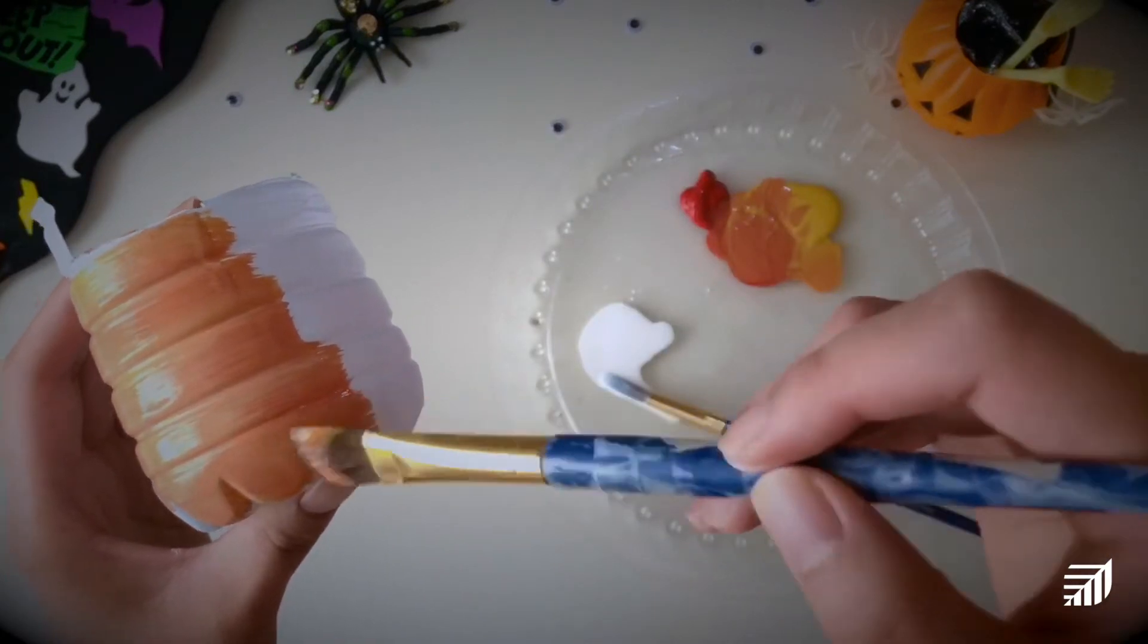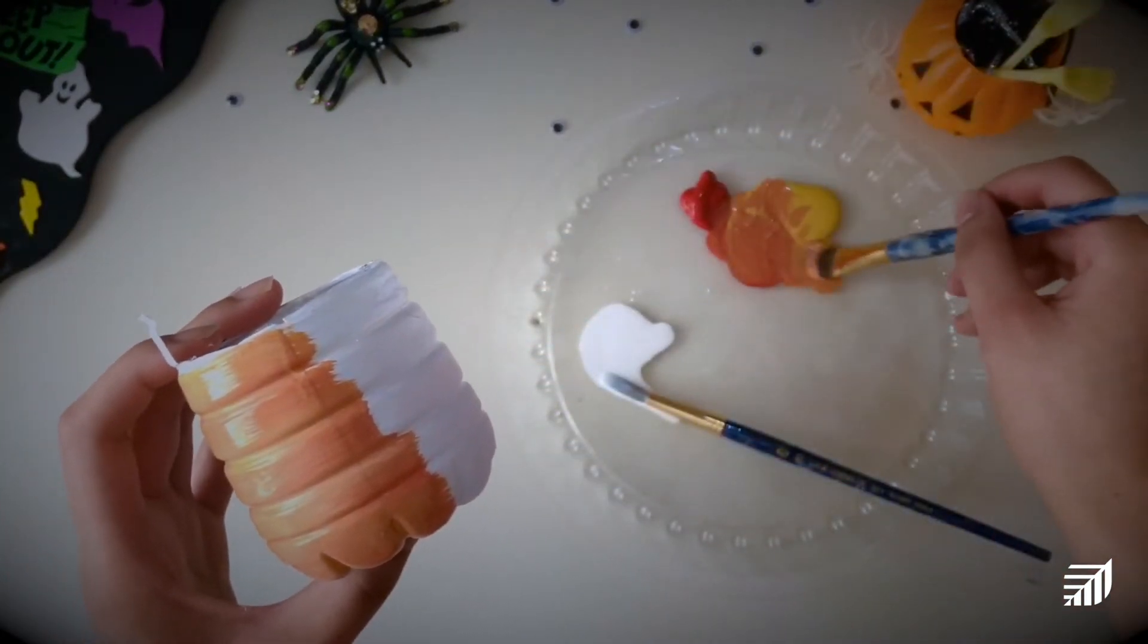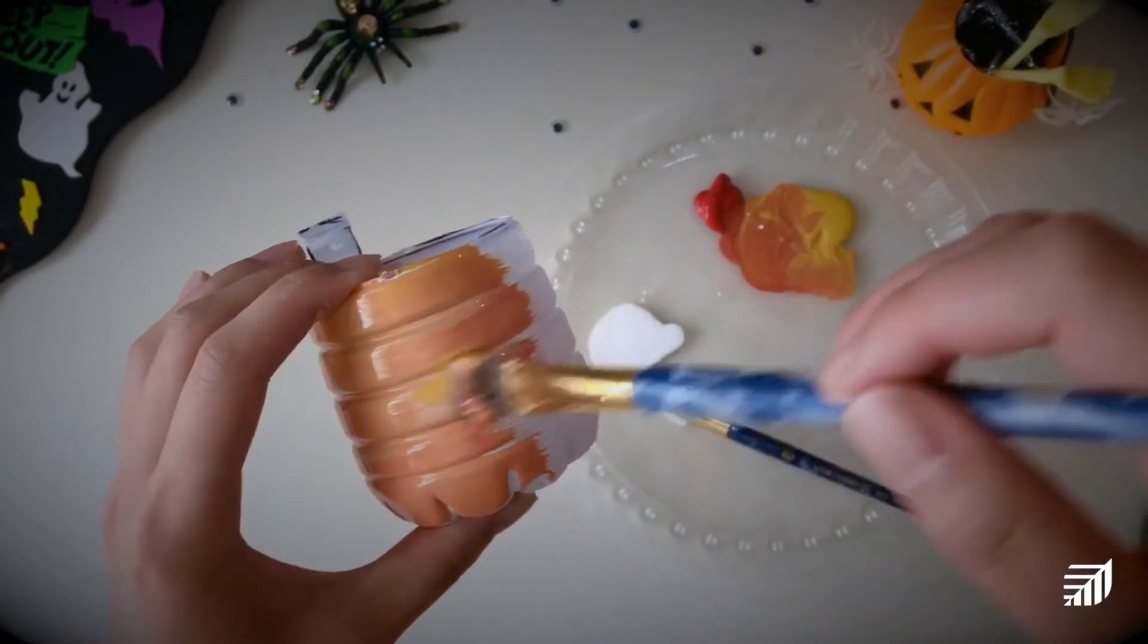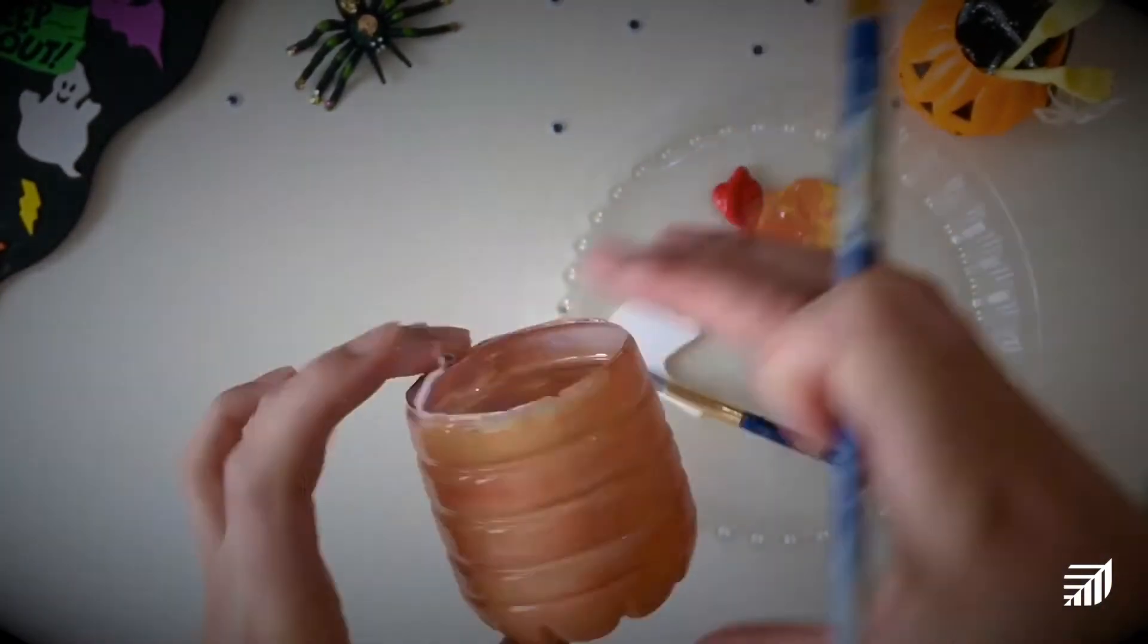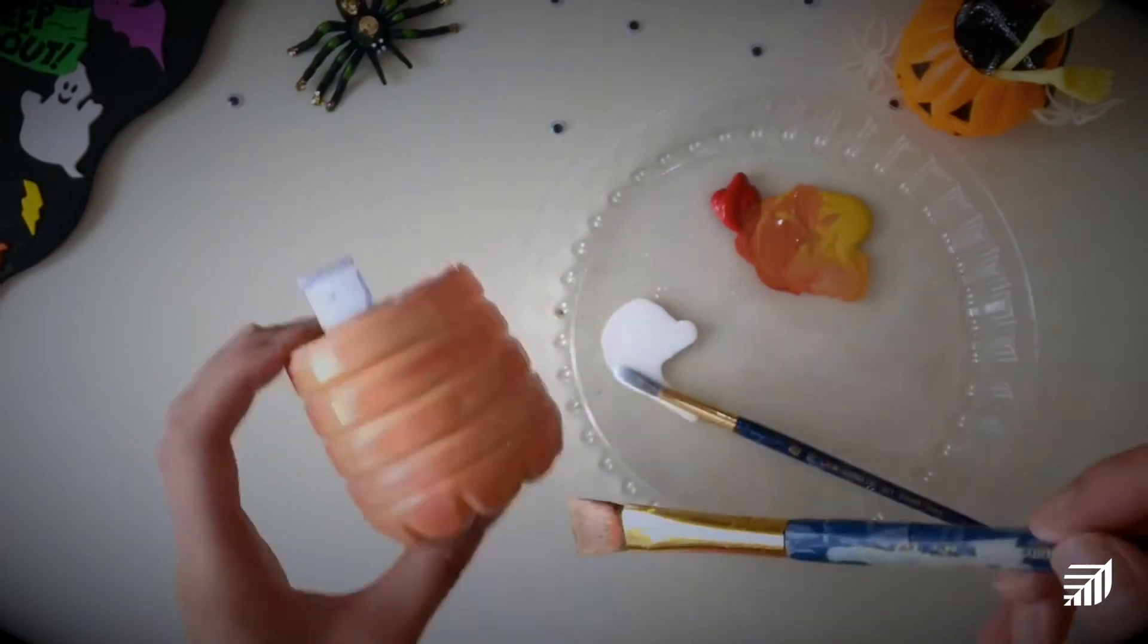Once that's fully dried, we're now ready to apply the orange paint. I'm just going to finish applying the orange all around the outside except for the stem and then probably let that dry and apply another coat.